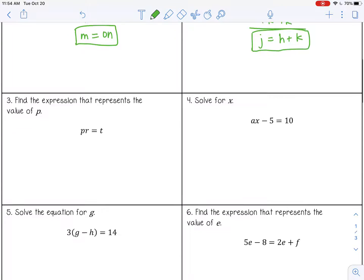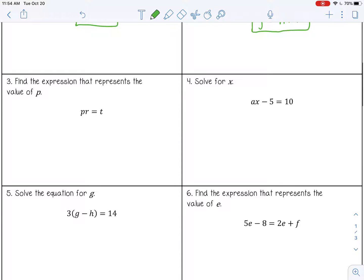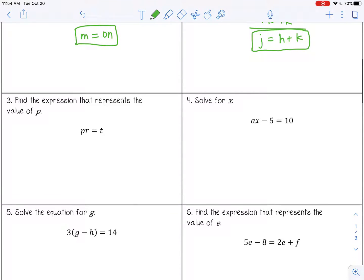Find the expression that represents the value of p. I want to isolate p, so I'm going to divide by r on both sides. So p equals t over r.